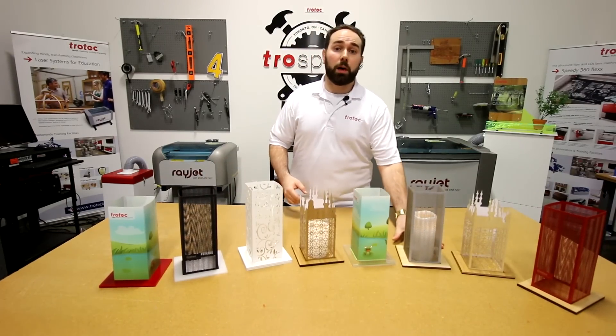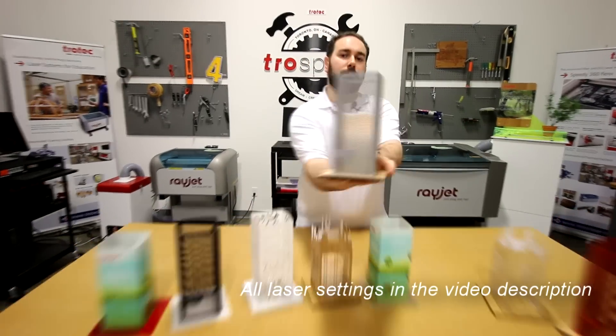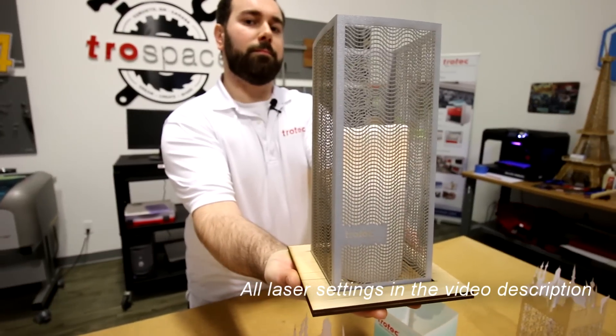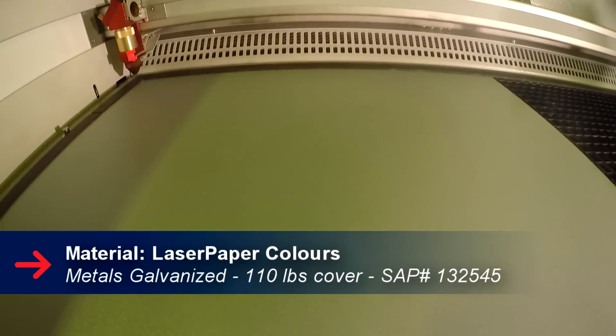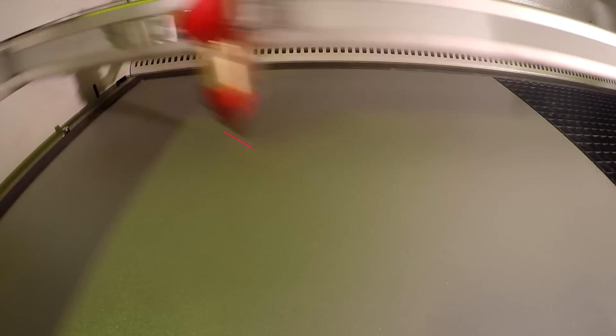First we're going to be showing you our colored laser paper lantern. We took our colored laser paper and placed it into our Speedy 400. We then cut and engraved our design.